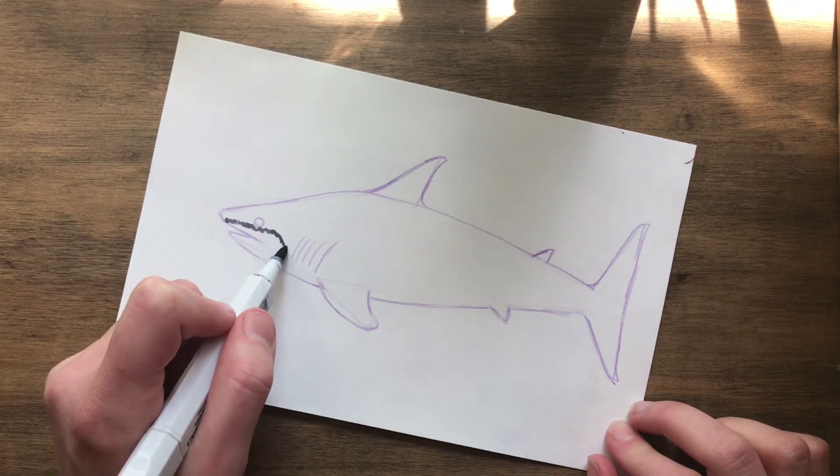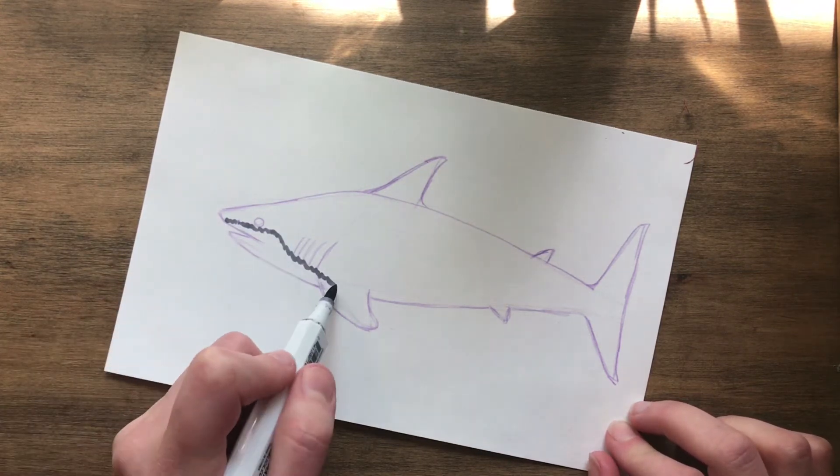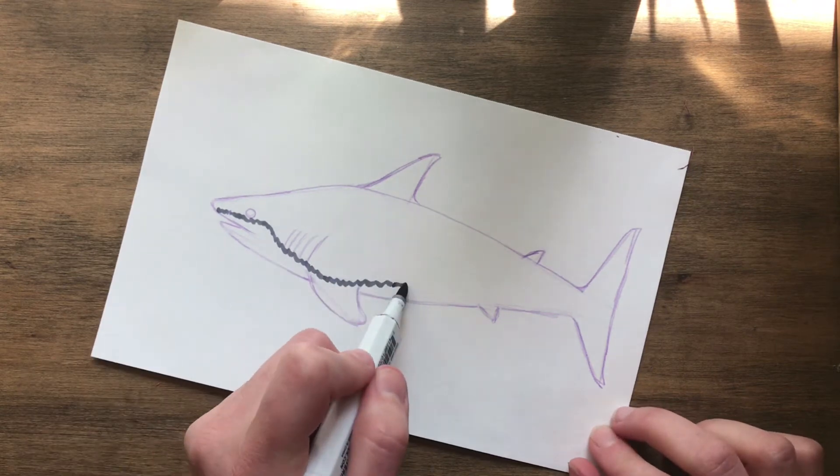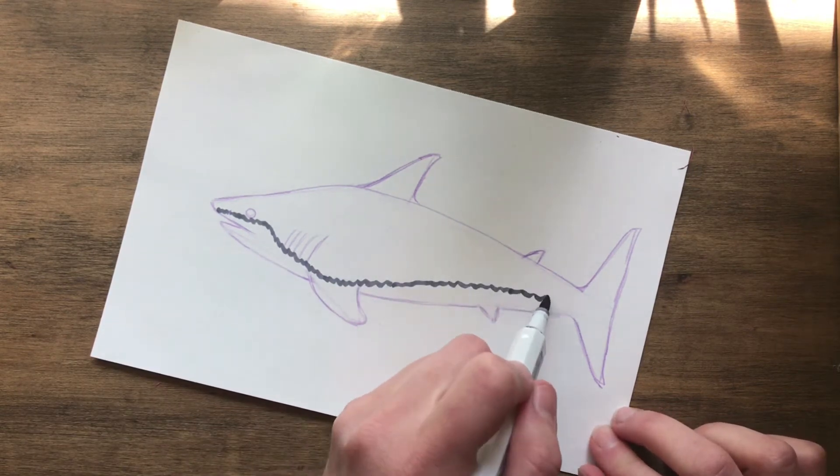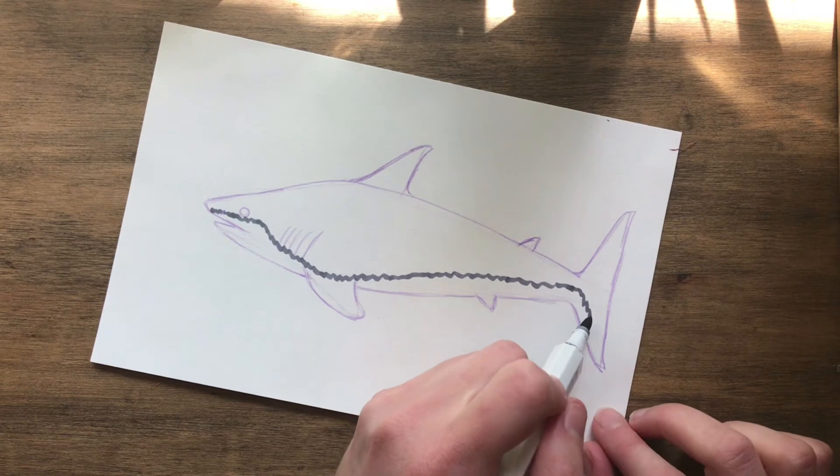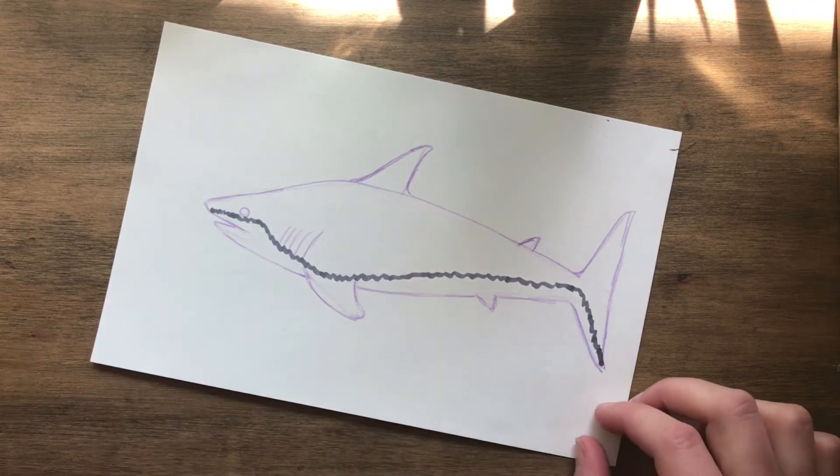Now you are going to squiggle from the nostril and under the eye down the gill. And along the body back to the tail and down the bottom tip of the tail.